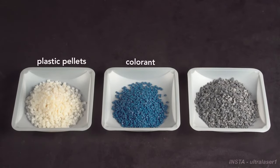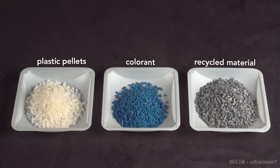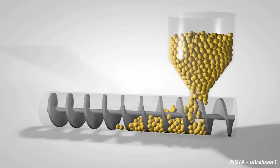They can be mixed with small amounts of pigment called colorant, or with up to 15% recycled material, then fed into the injection molding machine.